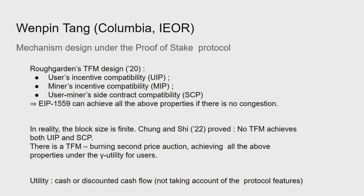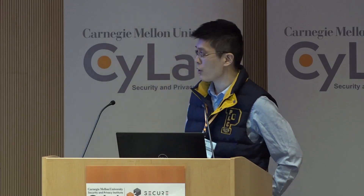EIP-1559 will achieve all these nice properties if there is no congestion. However, in reality you always have congestion, and a very nice paper by Chong and Shi shows the following: no TFM will achieve simultaneously UIC and ACP. There is a very nice randomized TFM which we call the burning second price auction, which can achieve all the above properties and some gamma utility for the users.